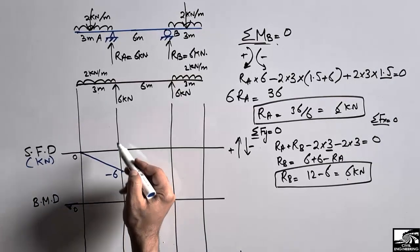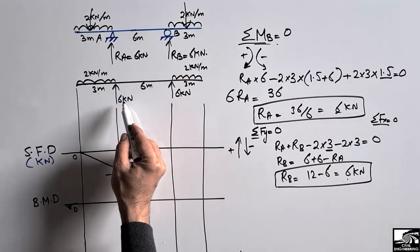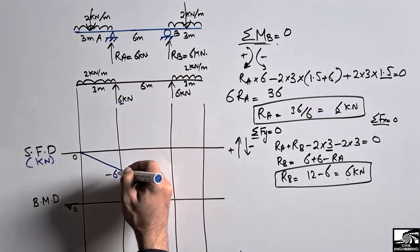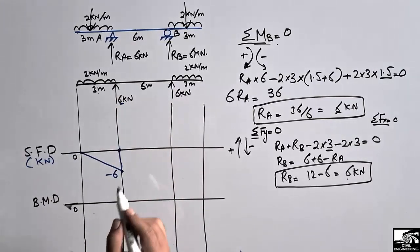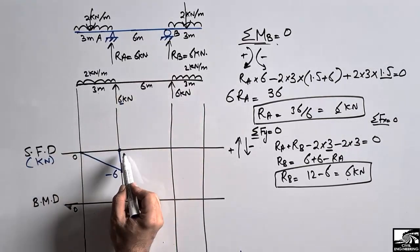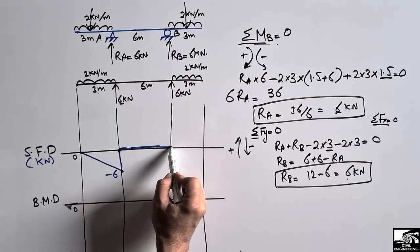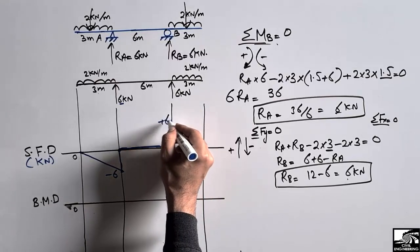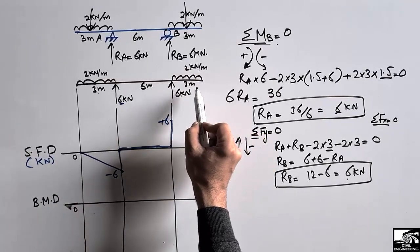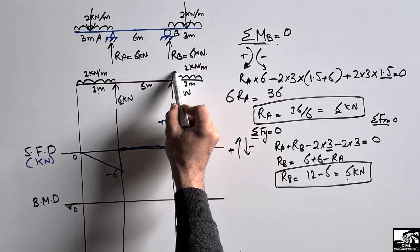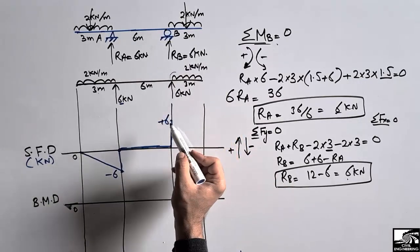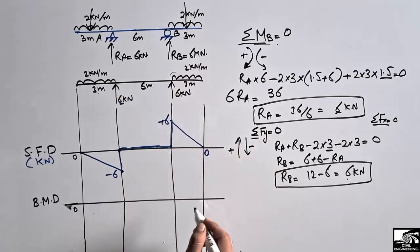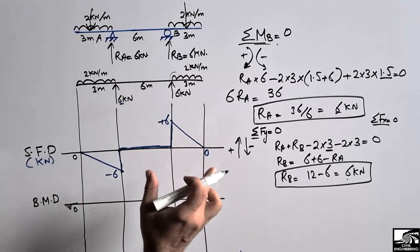At support A, the 6 kilonewton reaction acts upward. Since the shear force is minus 6 and we add plus 6, it becomes zero. There is no load on the middle portion, so the shear force remains a straight horizontal line at zero. At support B, the 6 kilonewton reaction acts upward, so the shear force jumps to plus 6. Then the right distributed load of 2 kilonewton per meter over 3 meters acts downward, giving minus 6, so plus 6 plus minus 6 equals zero. This completes the shear force diagram.